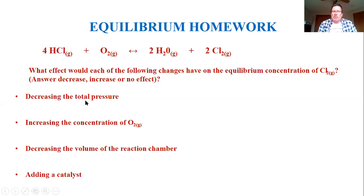So if I decrease the total pressure, which increases the volume, the equilibrium will shift to the side where it can get more moles of gas expanding. Well, if it's shifting towards the reactants, then you're going to lose chlorine. So that's going to be a decrease in the amount of chlorine concentration, because your equilibrium shifted towards the reactant side.